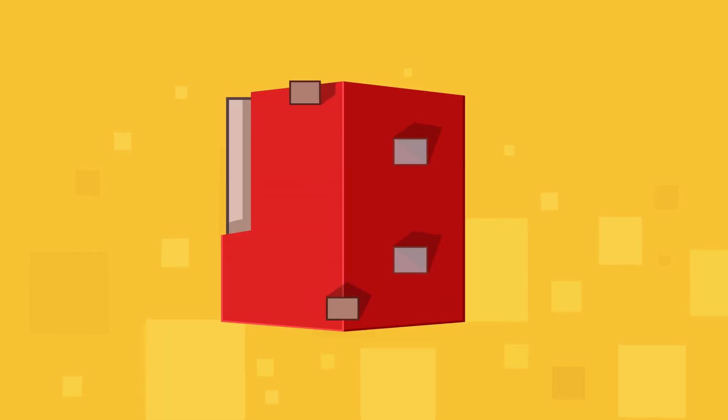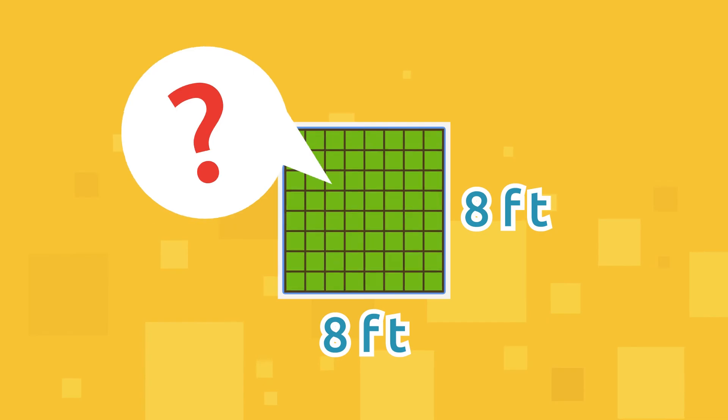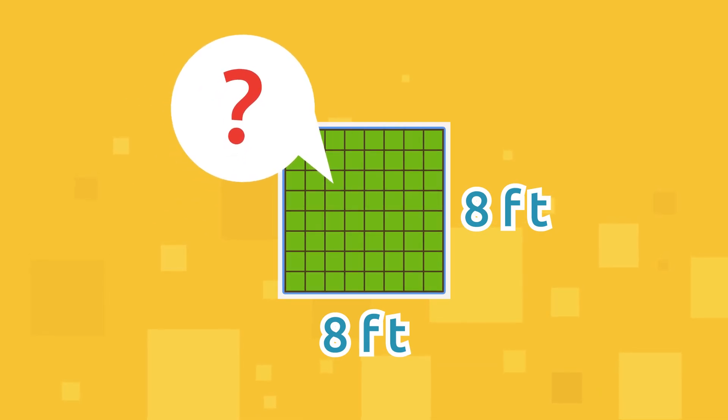Let's help Patricia a bit more. She wants to build a square garden next to her house. If each side of the square measures eight feet, how big would the garden be? To find out, we need to calculate the area of this square.